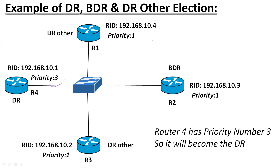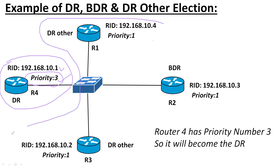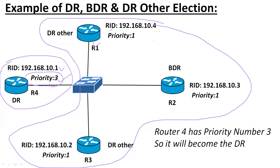We changed the priority number from 1 to 3. This router will automatically become the DR in the network, and a BDR election will occur among the remaining routers — so it is possible that another router will become BDR. We will practically observe all of this now.